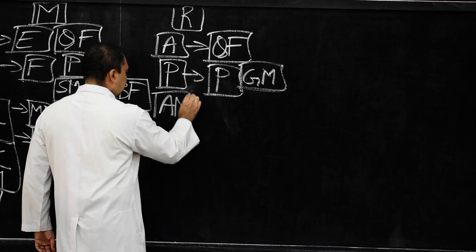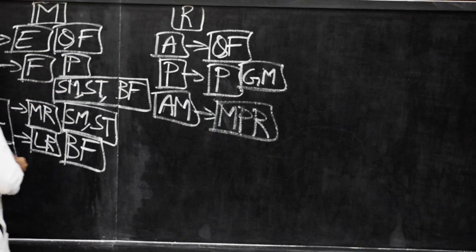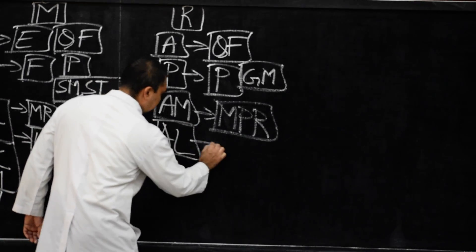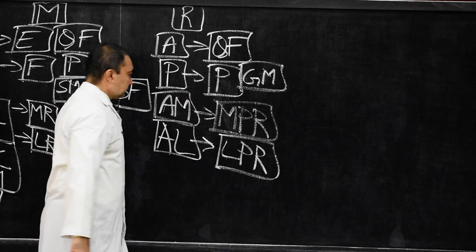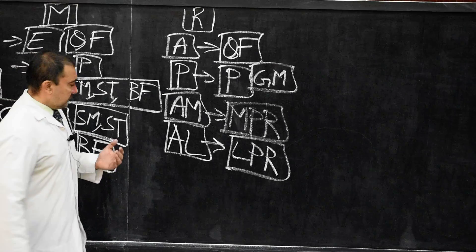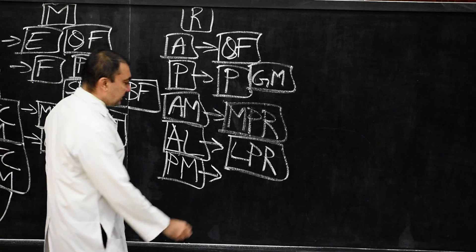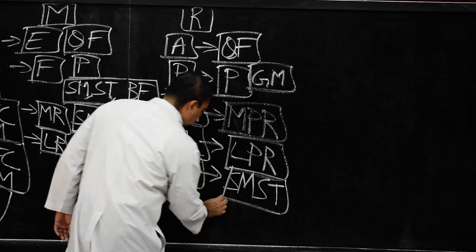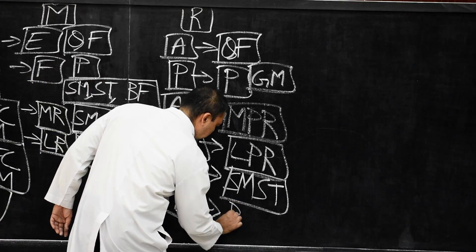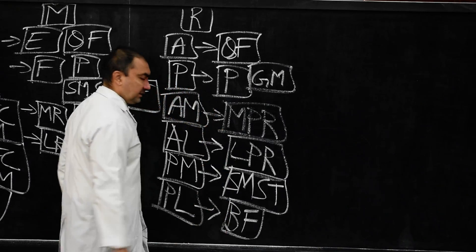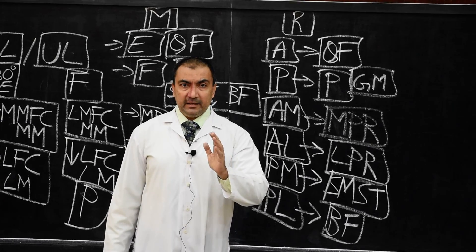Anteromedially, it is related with the medial patellar retinaculum. Anterolaterally, it is related with the lateral patellar retinaculum. Posteromedially, the knee joint is related with semi-membranosus and semi-tendinosus. Posterolaterally, it is related with the biceps femoris muscle. These are the relations of the knee joint. Thank you very much.